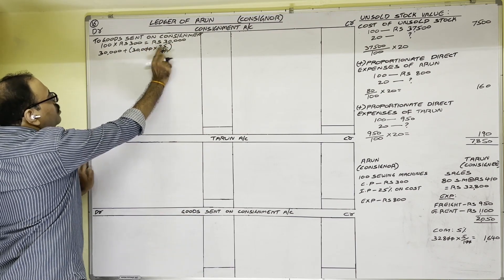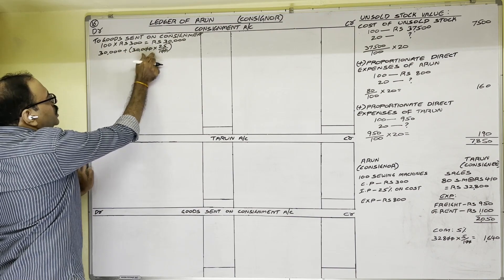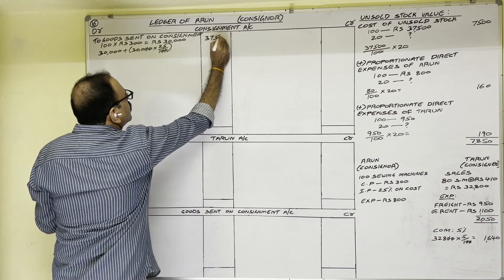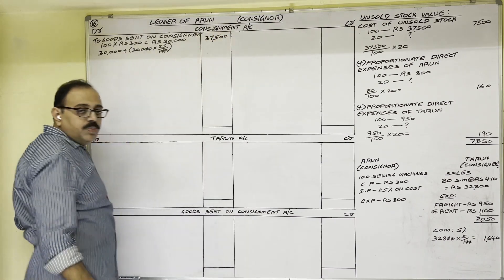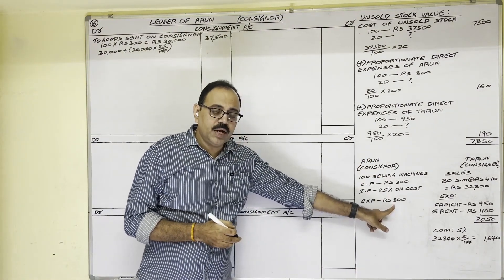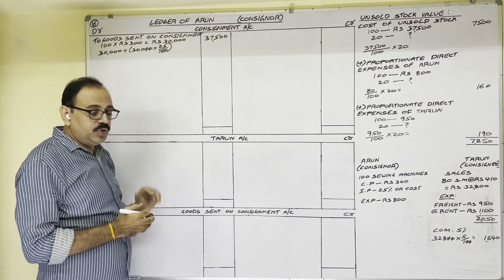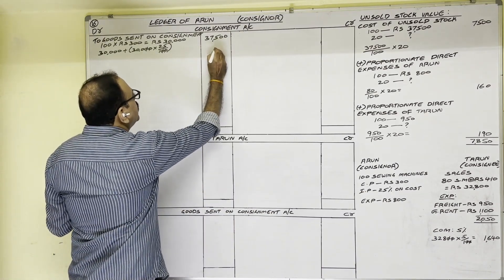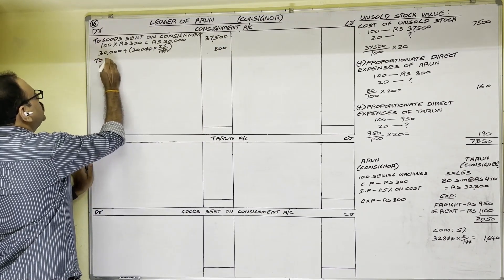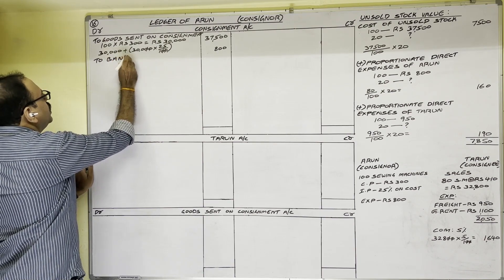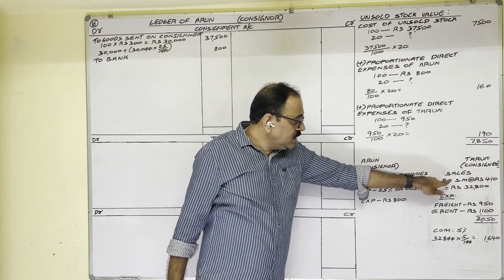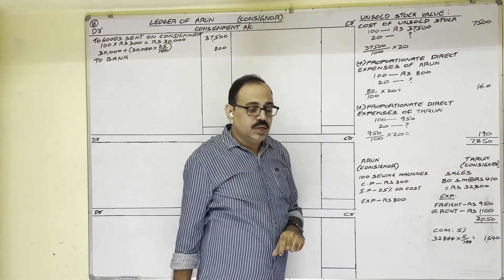30,000 is the cost price. Invoice price is fixed at 25 percent above cost, so 30,000 + 25% of 30,000 = 30,000 + 7,500 = 37,500. That is the total goods invoice price. Next, to sell these goods, the consignor's expenses are written to bank — our assumption is that he pays through his bank account.